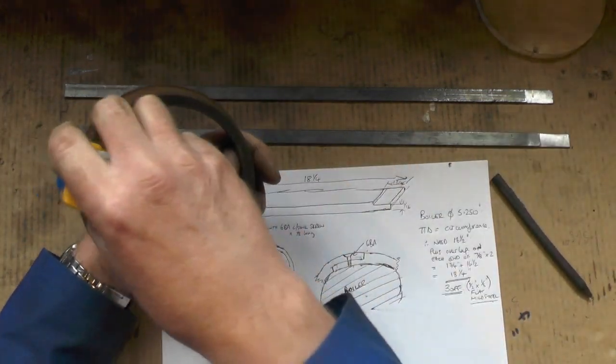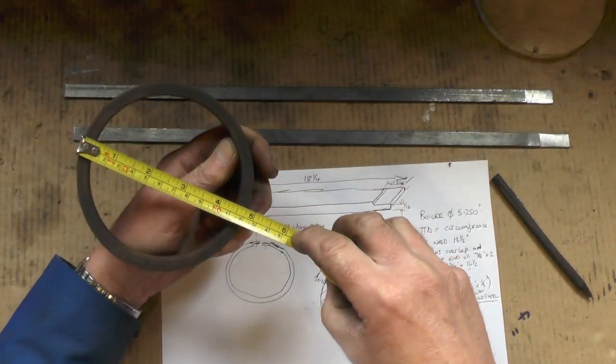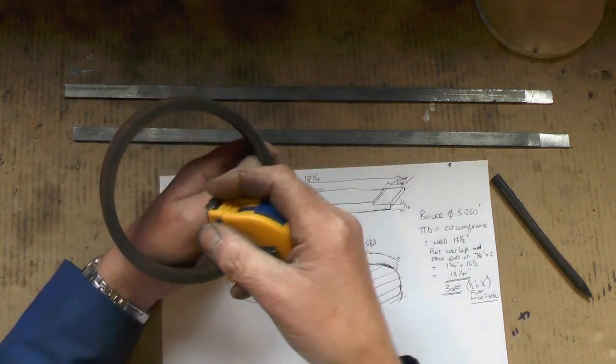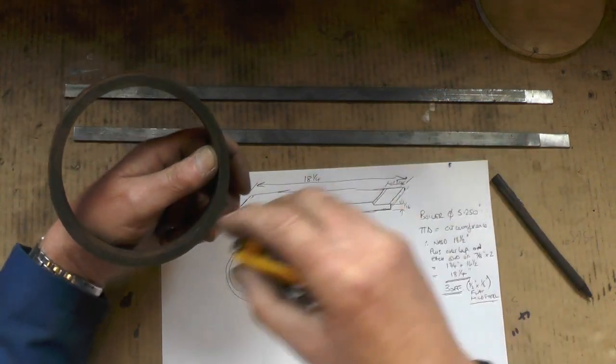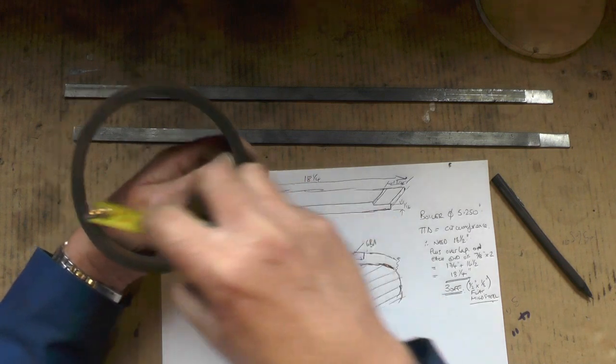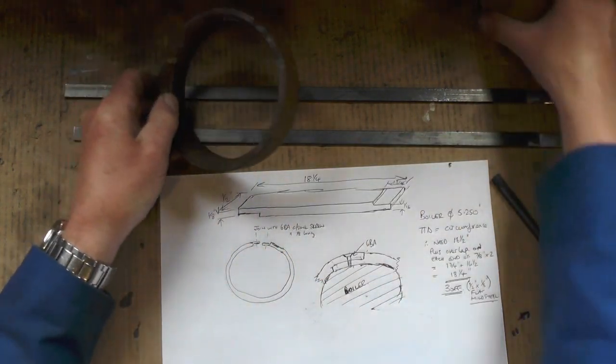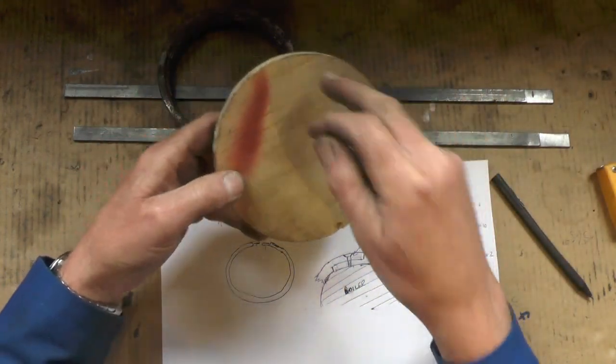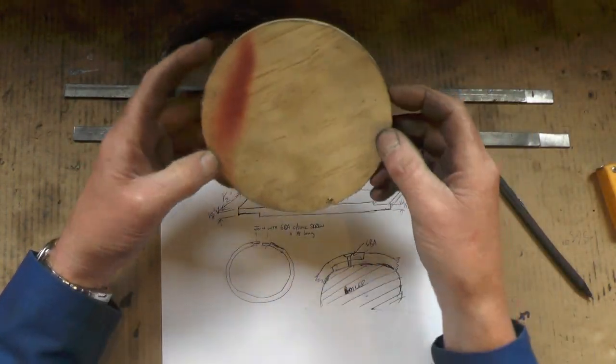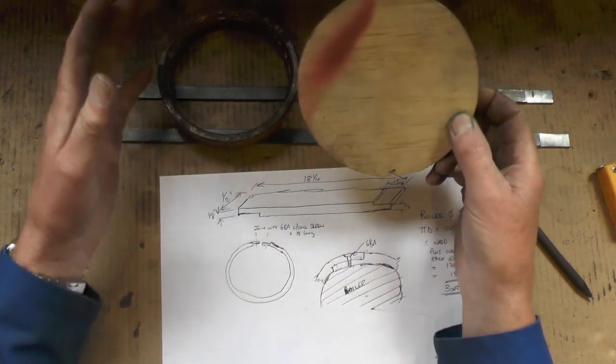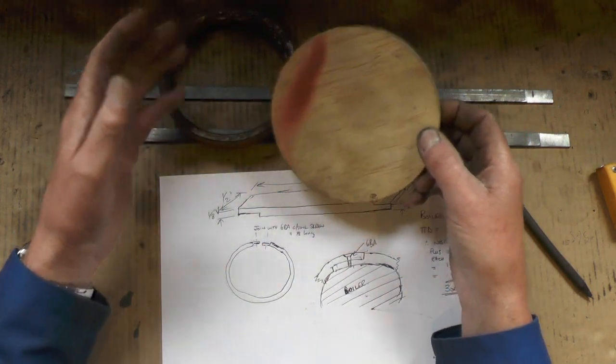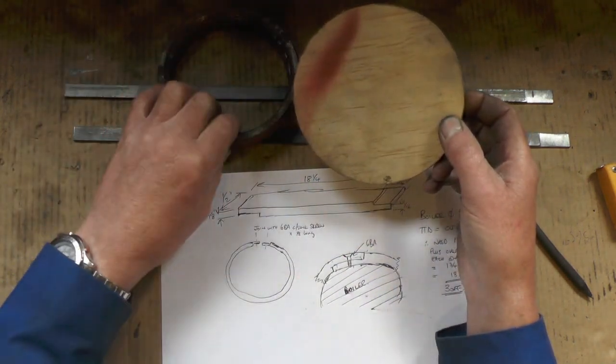I'm going to bend them around this piece of steel which is less diameter than I need, because when I bend it round it's going to spring out. I'm just doing a guesstimation here of how much it's going to spring, and then once I've bent it, that's more or less the gauge of the diameter I want to be at.